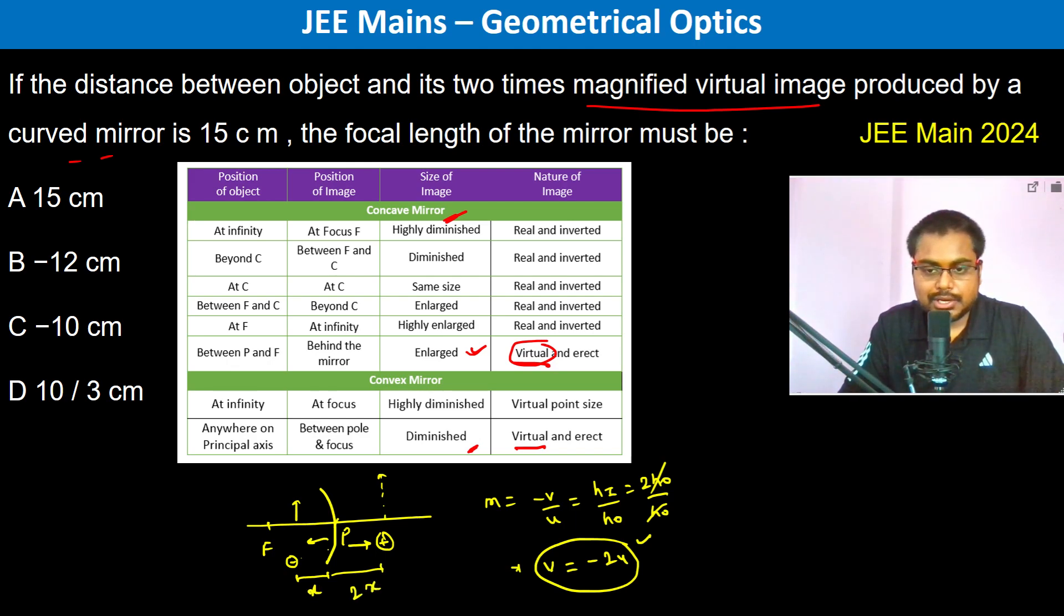Now therefore we can write 1 by V plus 1 by U is equal to 1 by F. Now so this is 3x. 3x is equal to 15 centimeter because that's what is mentioned in the question - the distance between the object and its image is 15 centimeter. So therefore x becomes actually 5 centimeter. So therefore we have 1 by V which is 10 plus 1 by U which is minus 5 is equal to 1 by F.